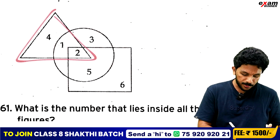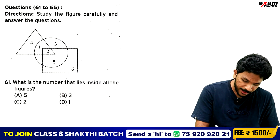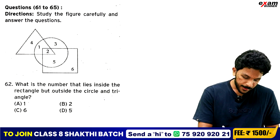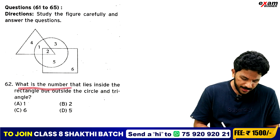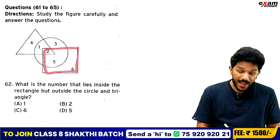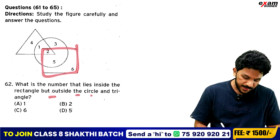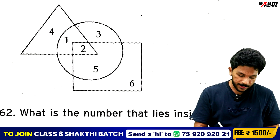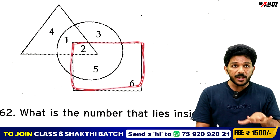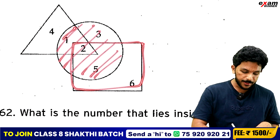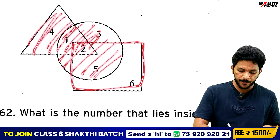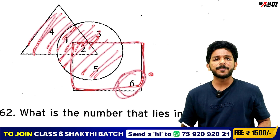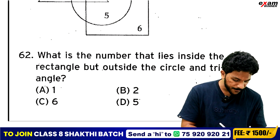Square also yes, and triangle also yes. What is the number that lies inside the rectangle? This is the first condition of the triangle, but outside the circle. The triangle, the circle, and the triangle — let's look at this. This is the rectangle, this is the circle and the triangle. The number 6 is in the rectangle. The answer is 6.